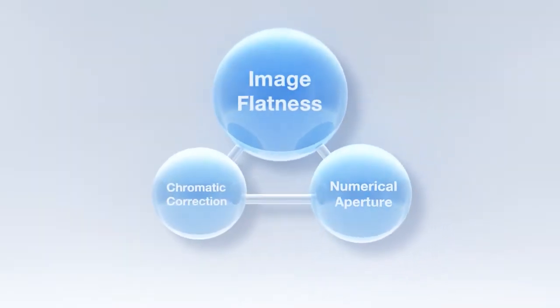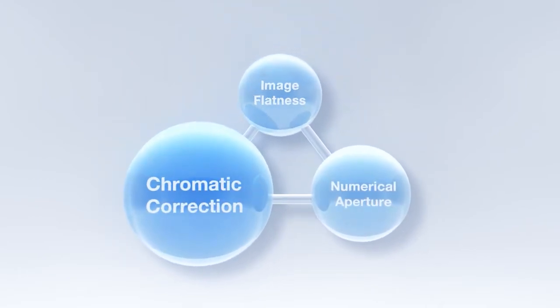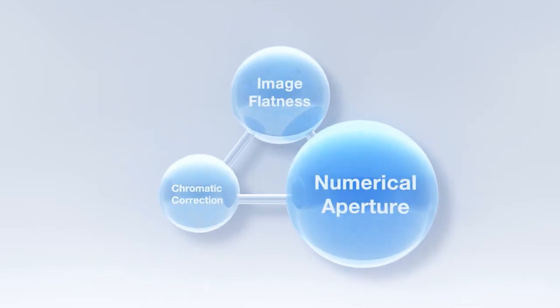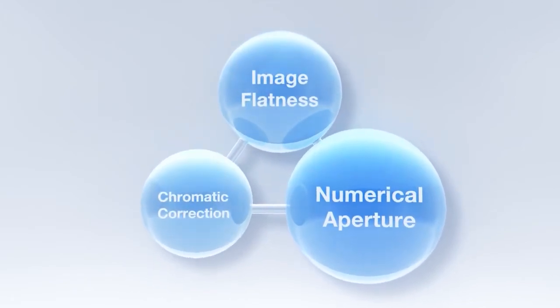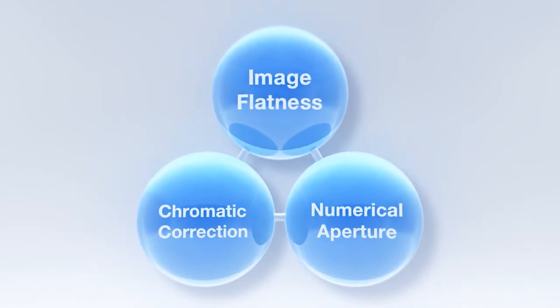Conventional objectives cannot correct for all three attributes due to the technical barriers that force a trade-off between flatness, chromatic correction, and numerical aperture. Our innovative manufacturing technology has broken this barrier, enabling X-Line objectives to deliver improvements in all three at the same time.